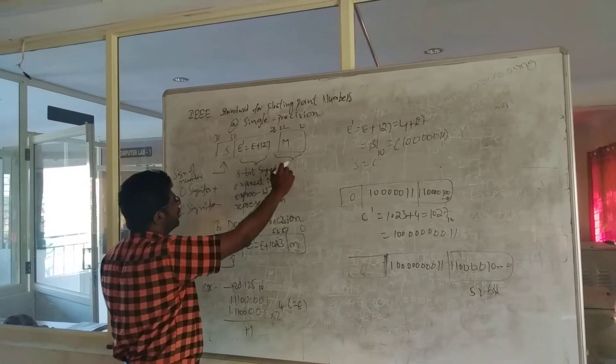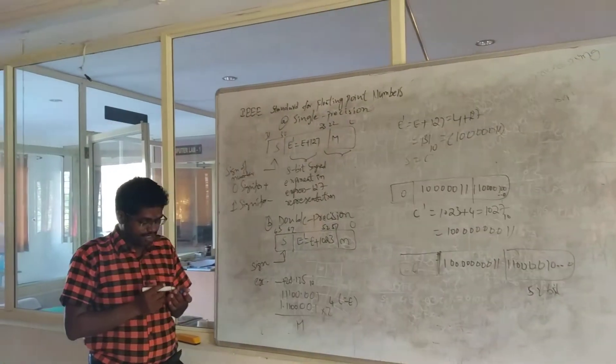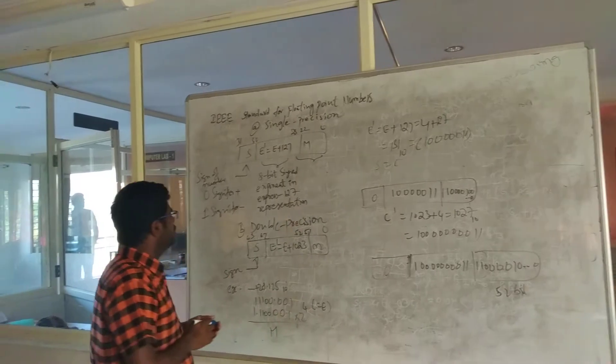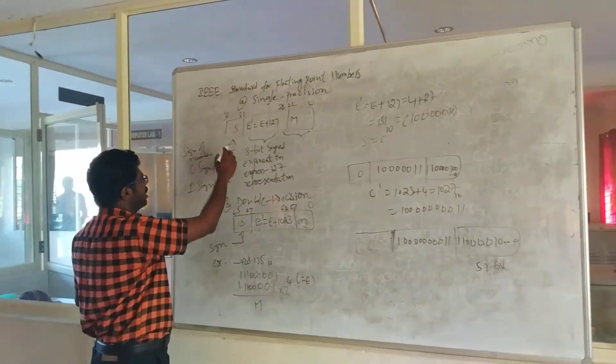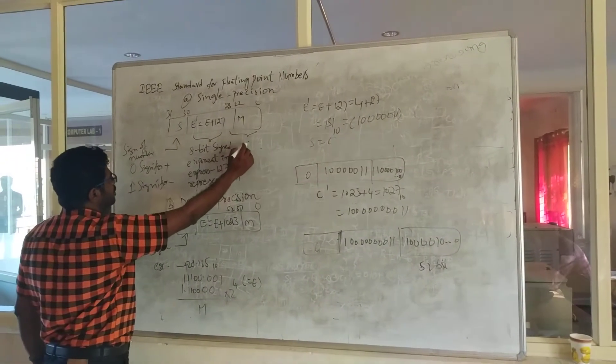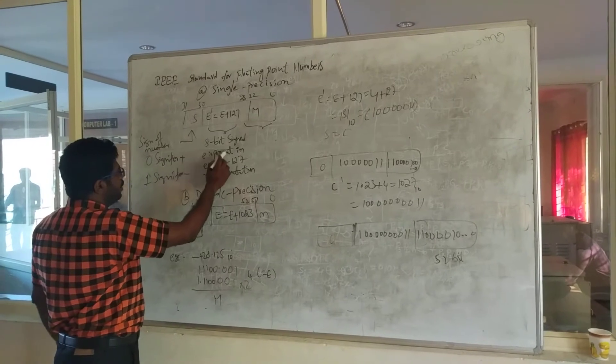The mantissa bits start from 0 to 31, that is 32 bits total. The overall size of the single precision is 32 bits. Here S stands for sign bit - 1 bit is for sign, 23 bits for mantissa, and followed by 8 bits for exponent.